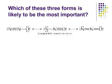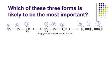Let's look at a problem where we're asked to determine which of three forms is likely to be most important, using formal charge arguments. We need to calculate the formal charges for all the N and O atoms. I'll number them to keep track since they're not all doing the same thing. For nitrogen number one: five valence electrons minus two lone pair electrons minus three bonds — the formal charge of nitrogen one is zero.